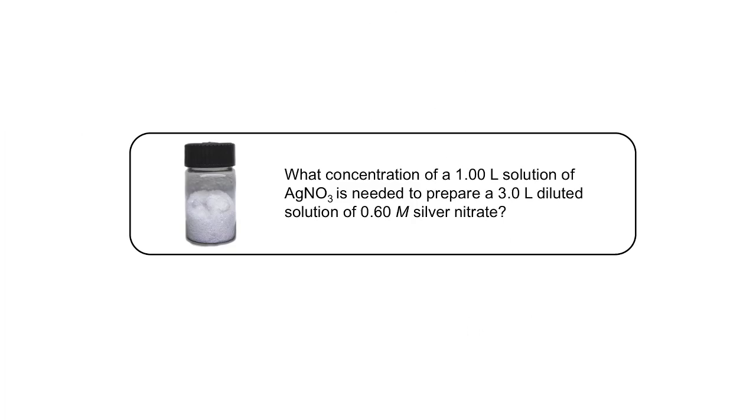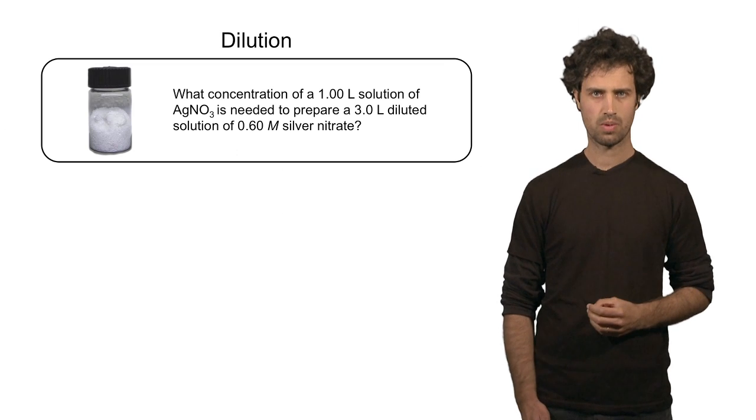Let's look at one more example. In this example we have an original solution, which is 1 liter in volume. We don't know its concentration yet. We want to dilute this original solution to a total volume of 3 liters, and the final concentration has to be 0.6 molar of silver nitrate. How do we solve this question?